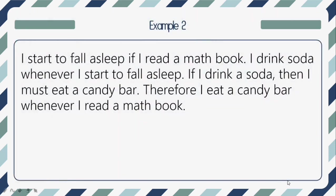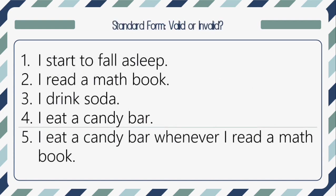Example 2. I start to fall asleep if I read a math book. I drink soda whenever I start to fall asleep. If I drink a soda, then I must eat a candy bar. Therefore, I eat a candy bar whenever I read a math book. The standard form gives us: Number 1: I start to fall asleep. Number 2: I read a math book. Number 3: I drink soda. Number 4: I eat a candy bar. Number 5 (conclusion): I eat a candy bar whenever I read a math book.